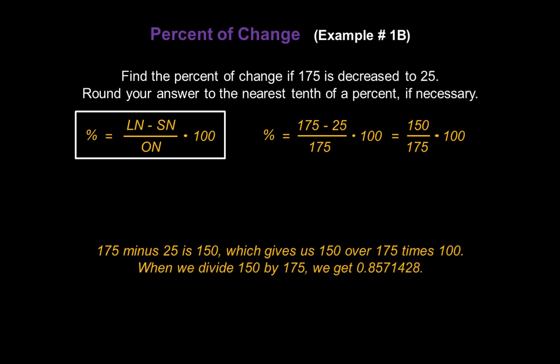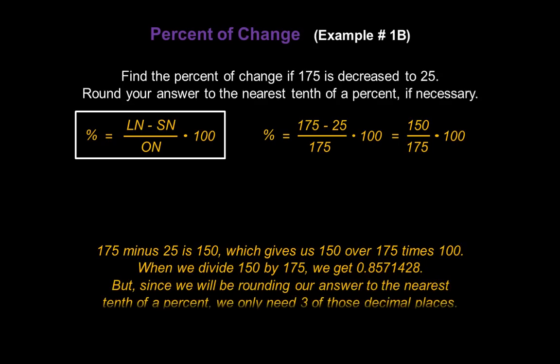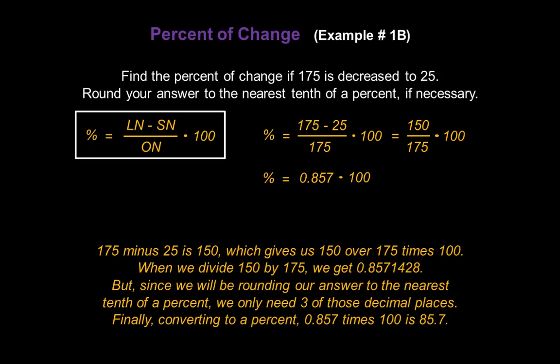When we divide 150 by 175 we get a long decimal: 0.8571428... Since we're rounding to the nearest tenth of a percent, we only need three decimal places. So we rewrite the equation as percent equals 0.857 times 100. Converting to a percent: 0.857 times 100 is 85.7. That means when 175 is decreased to 25, that is an 85.7% decrease.